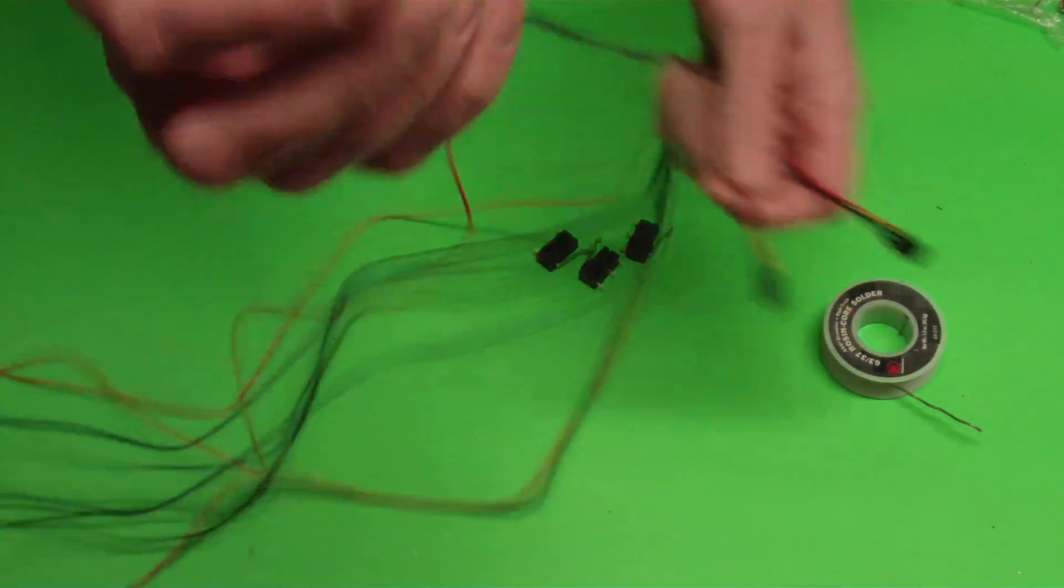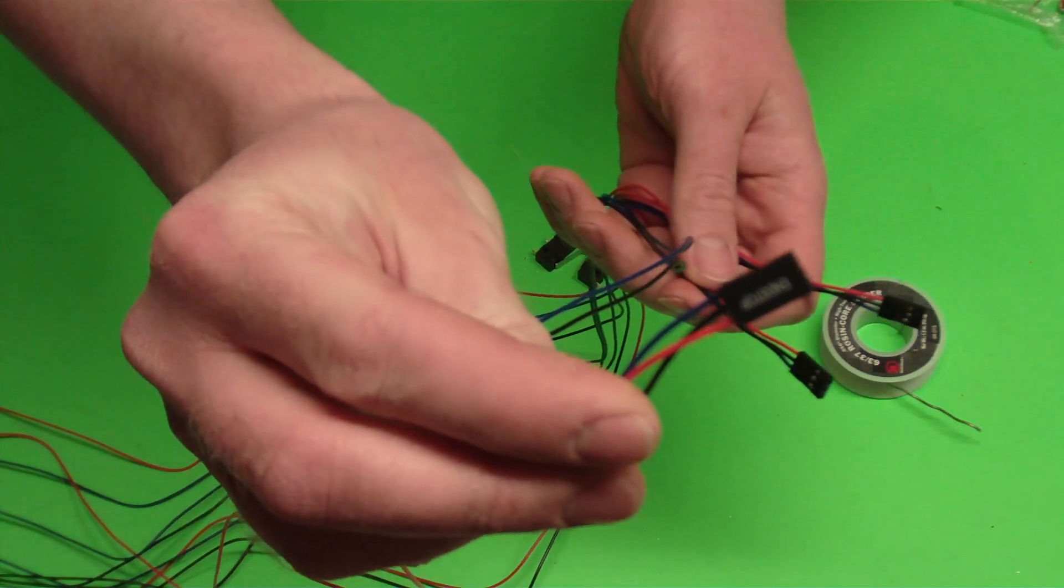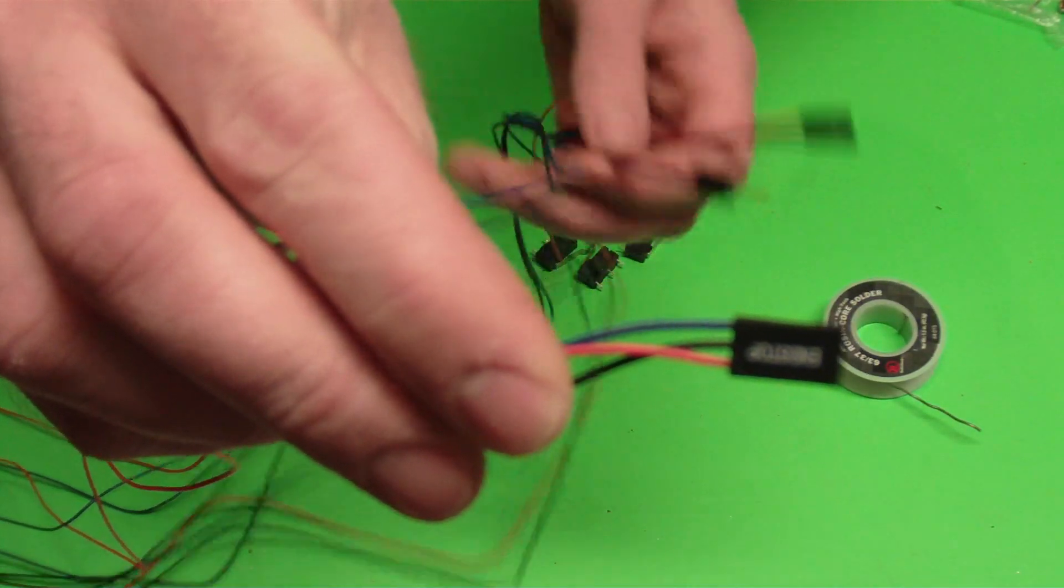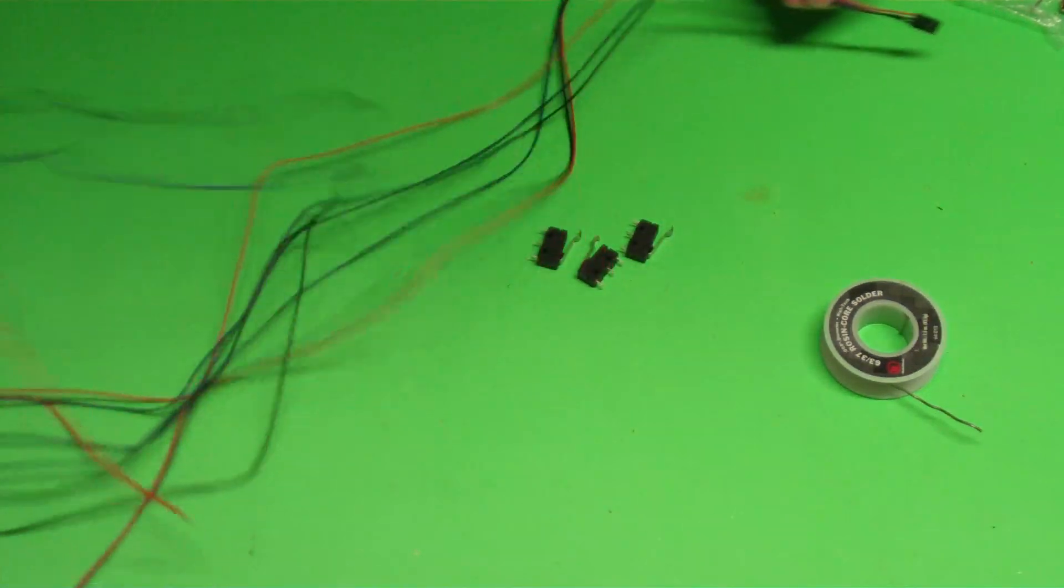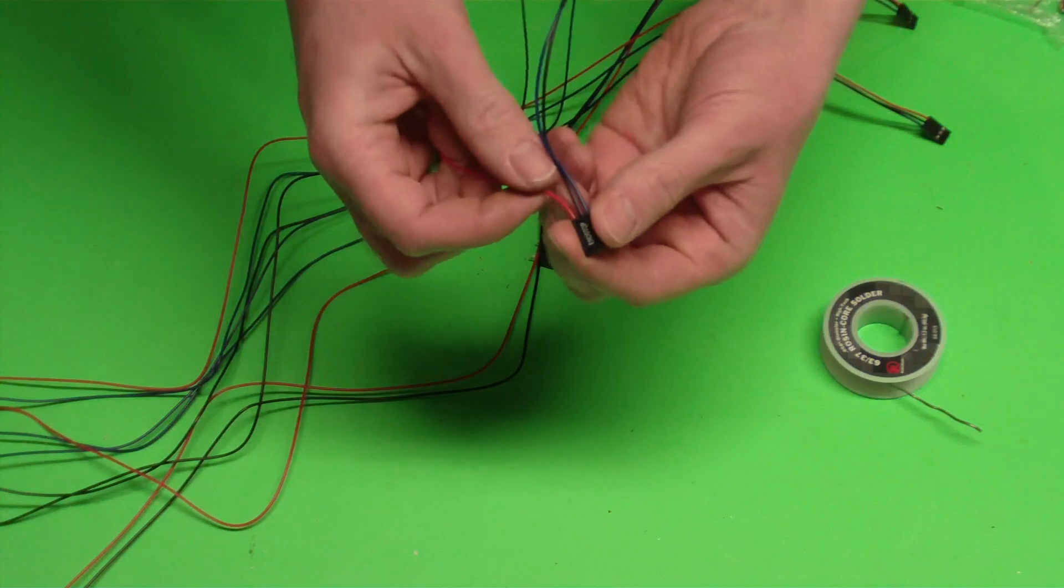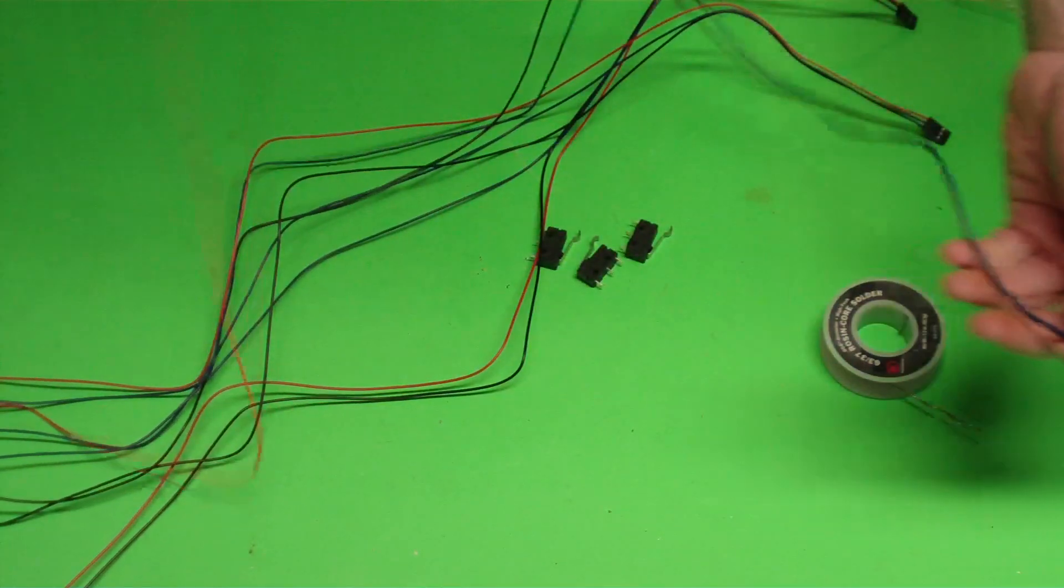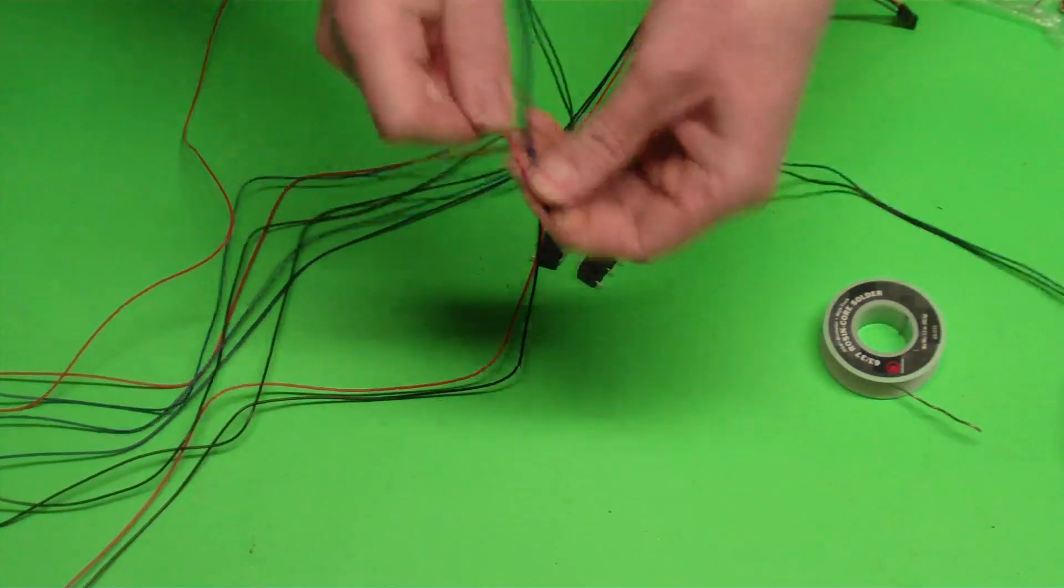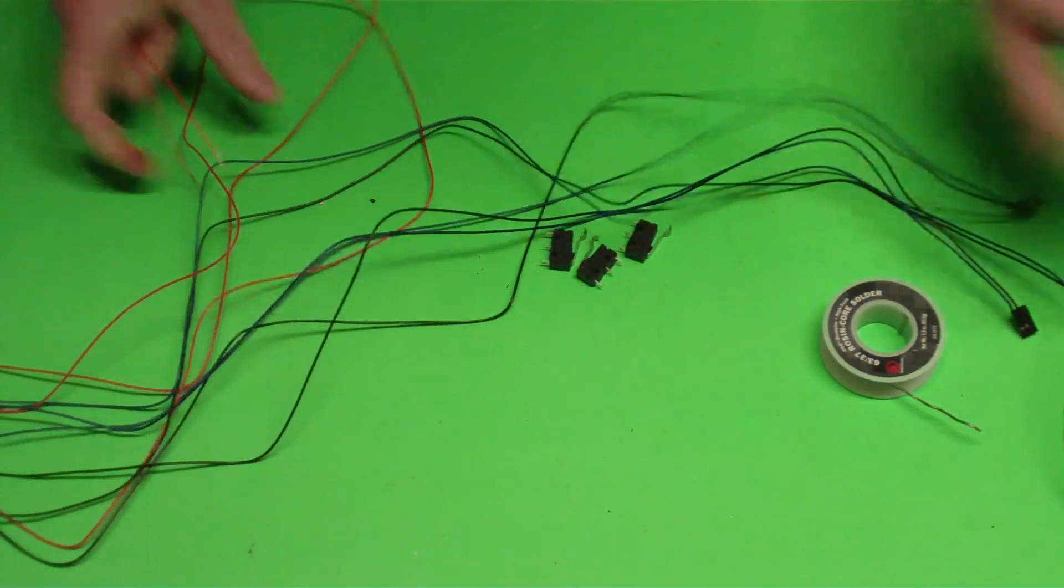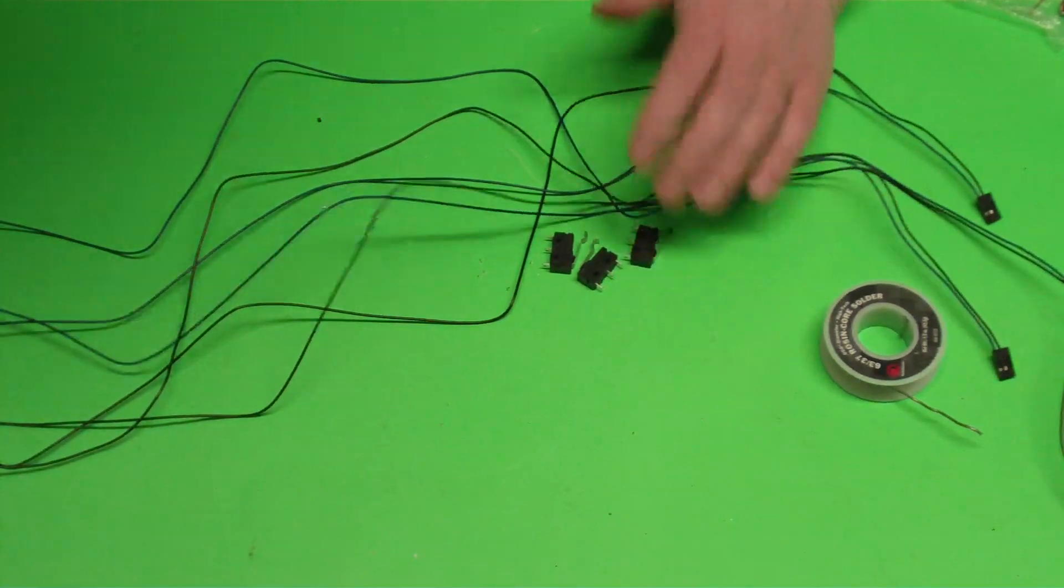You're going to grab the three wires where it says end stop. These all have three wires: a red, a black, and a blue. We don't use the red so you can just get that out and throw it away because our end stops will not be using those.